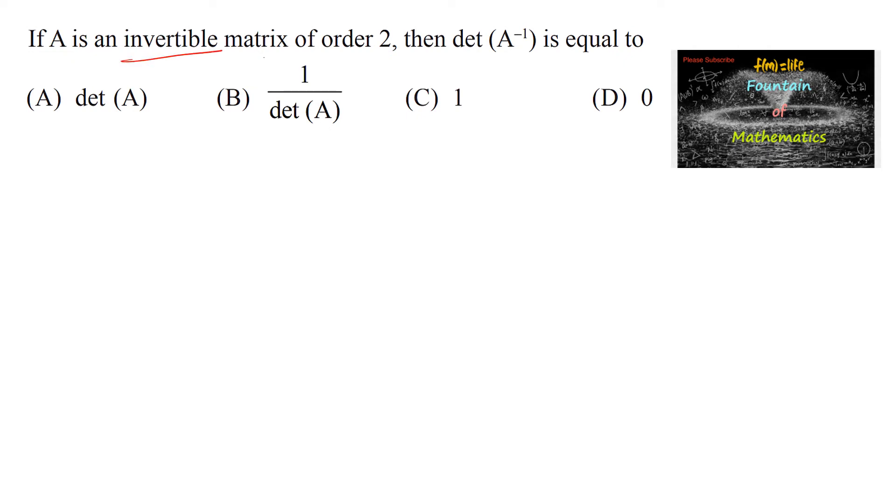If A is an invertible matrix of order 2, then determinant of A inverse is equal to... Since it is given A is invertible, so A inverse exists.